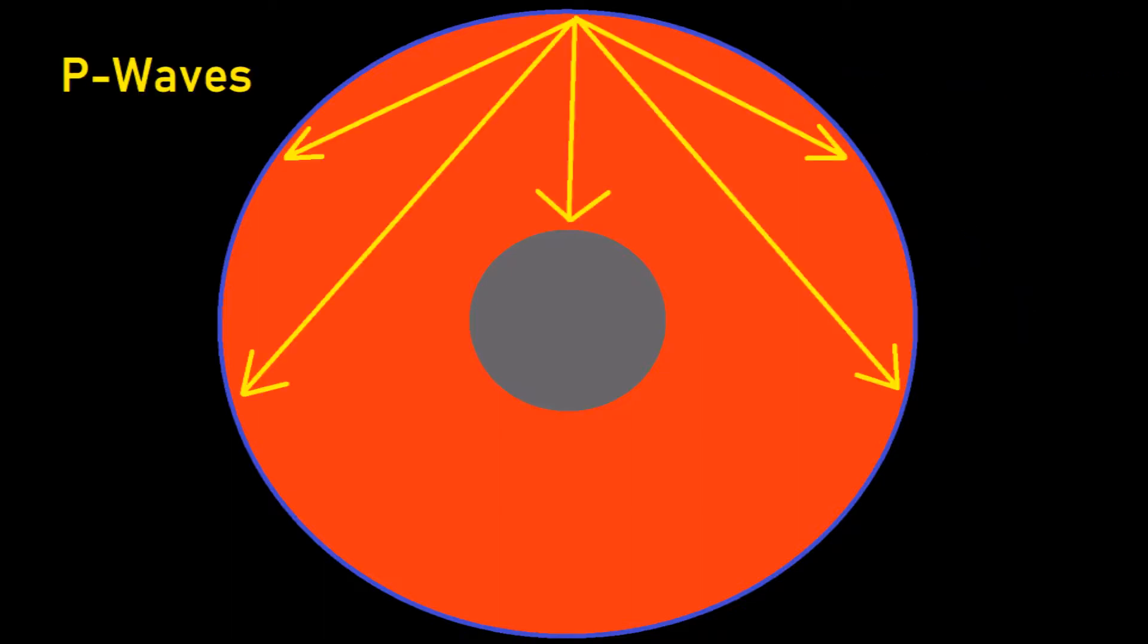When an earthquake happens, there are different types of waves. For example, there are S-waves that go over the surface of the planet, and then there are P-waves which go through the planet.